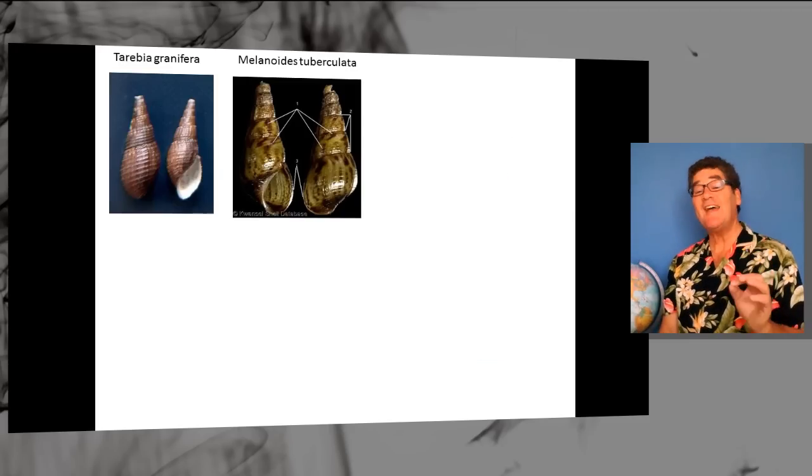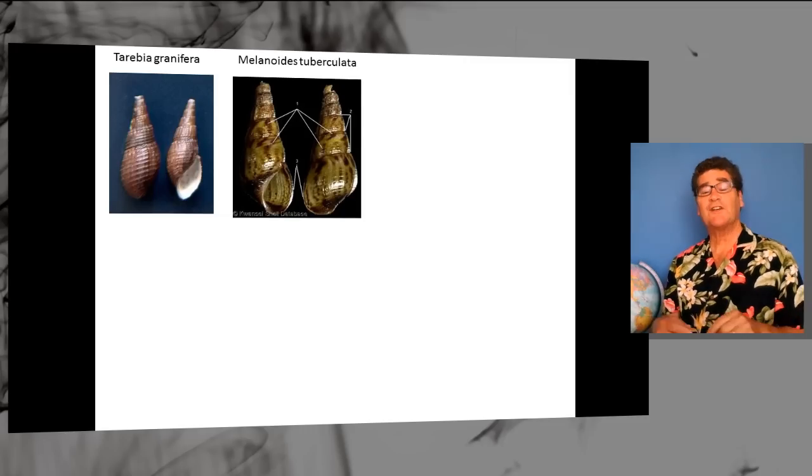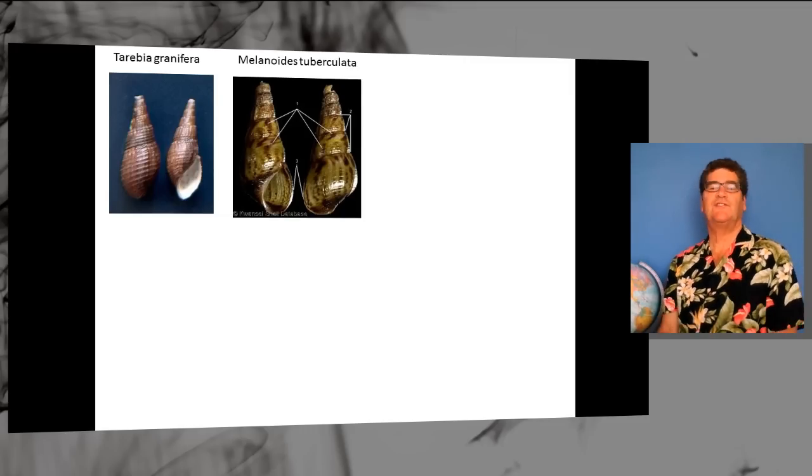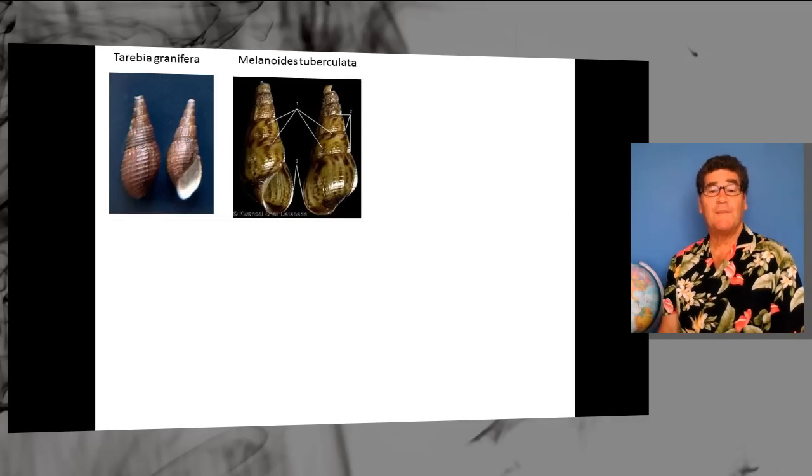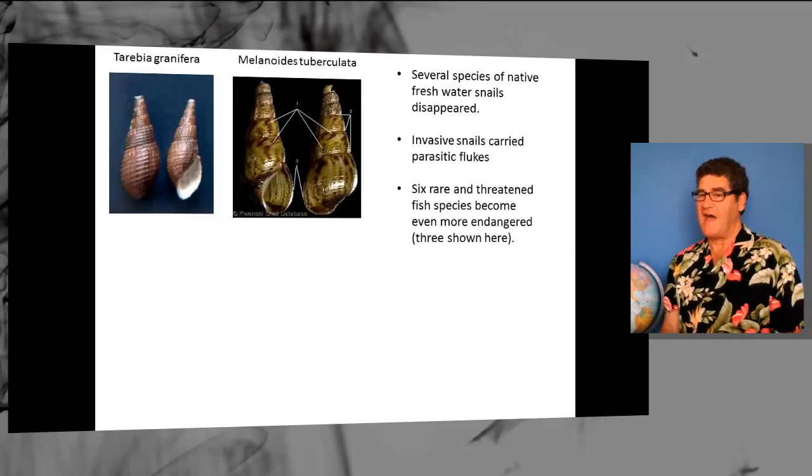But because snails serve as a host for flukes, we have to concern ourselves with how we move around snails in the world. These two snails from Asia arrived in North America, and they carried flukes. Bad things happen.